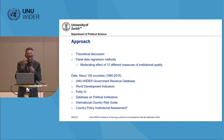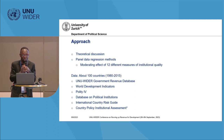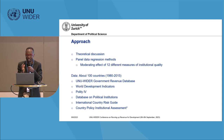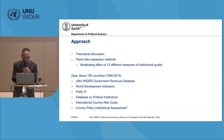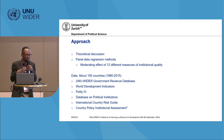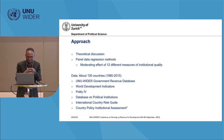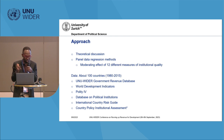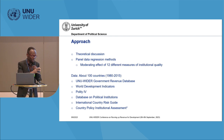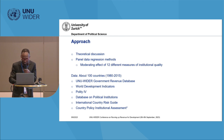I will engage in a brief theoretical discussion. In terms of approach, we use panel data regression methods. We draw from 12 measures of institutional quality, some of which have been commonly used in the literature. Data covers about 100 countries for the period from 1980 to 2015.